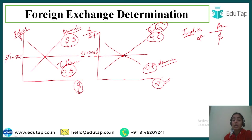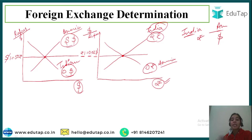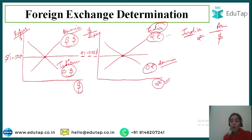Why are Indians demanding dollars? Because we want to import from America, we want to travel there as tourists, or we want to invest. Why are Americans supplying dollars? Because they are importing from India, or they are coming to India as tourists. So now, when demand and supply are equal, that is where the exchange rate is determined.